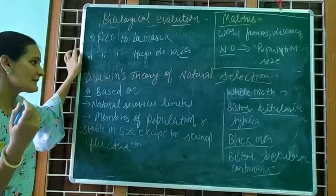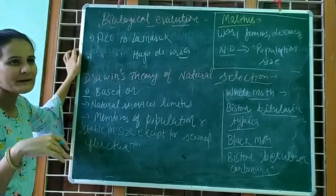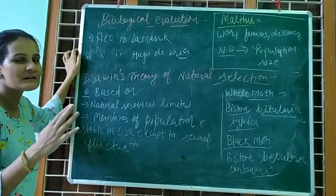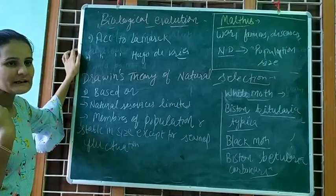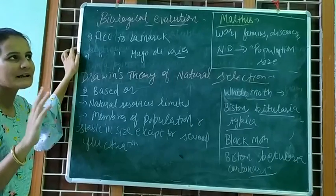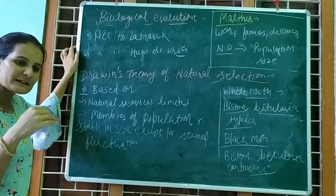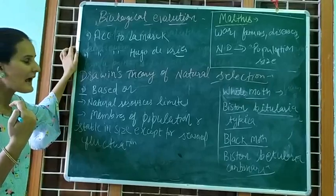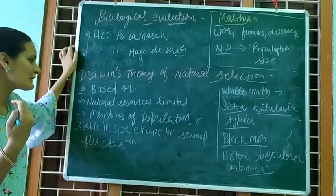Now we have to talk about the theory of natural selection. If there is any type of gene or organism that is adapted with nature, it will survive. If it is not able to adapt with nature, then nature will eliminate it. This is natural selection.